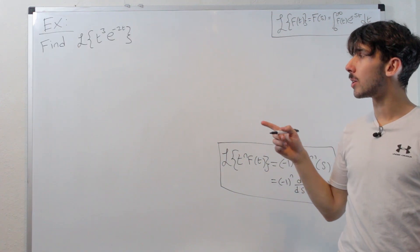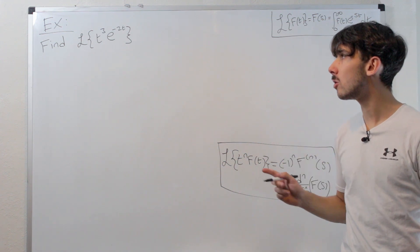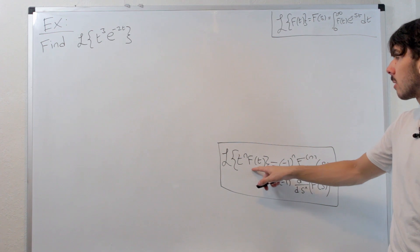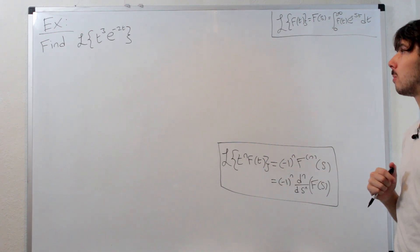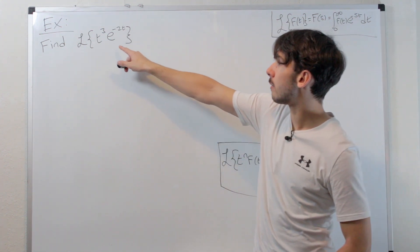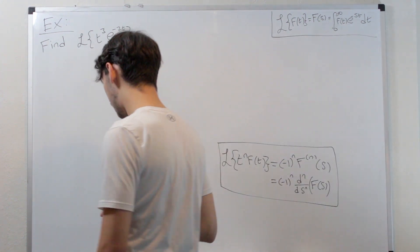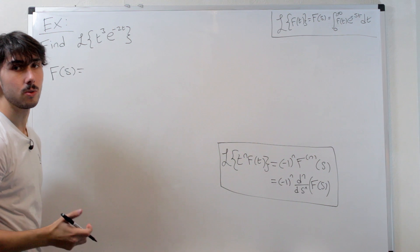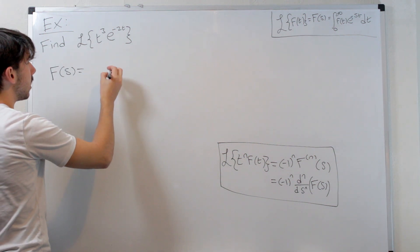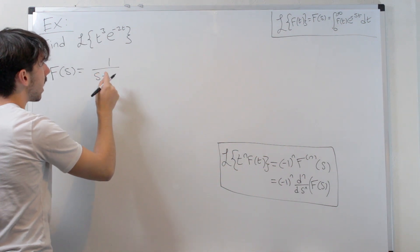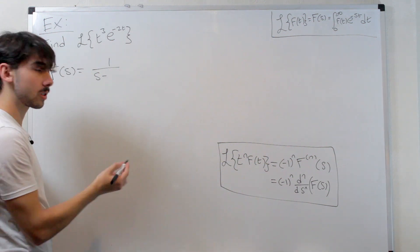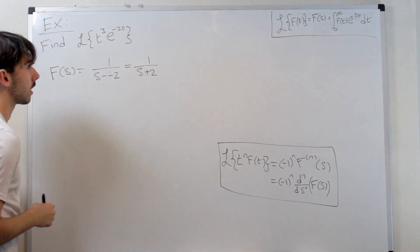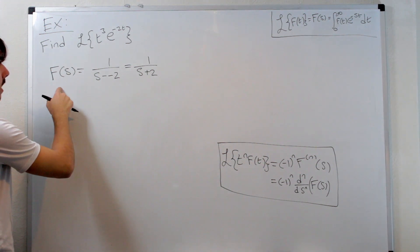So let's just do an example. We're going to take the Laplace transform of t cubed times e to the minus 2t. Notice it's in the same format: t to the power of a natural number times some function whose Laplace transform we know. In this question, f(t) is e to the minus 2t. The first thing we need to do is find capital F of s, which is the Laplace transform of e to the minus 2t. That's going to be 1 over s minus negative 2, which is of course 1 over s plus 2. So F of s is 1 over s plus 2.